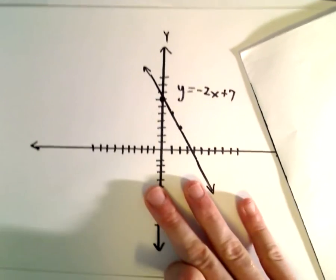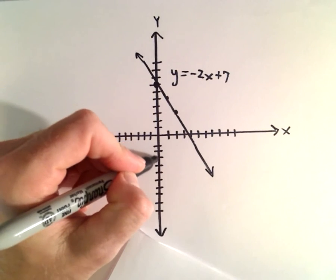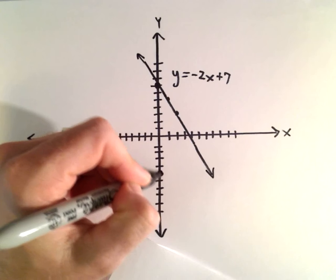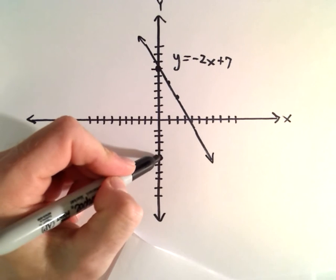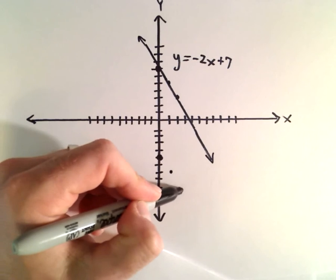Now the only thing that will be different for our other line is that it will have a y-intercept of negative 5. The slope is negative 2, so down 2 to the right 1, down 2 to the right 1.